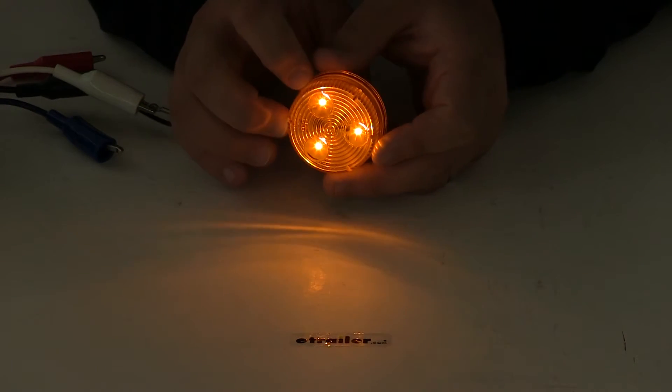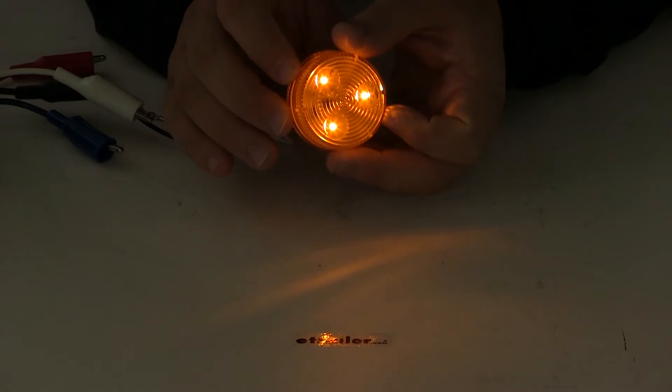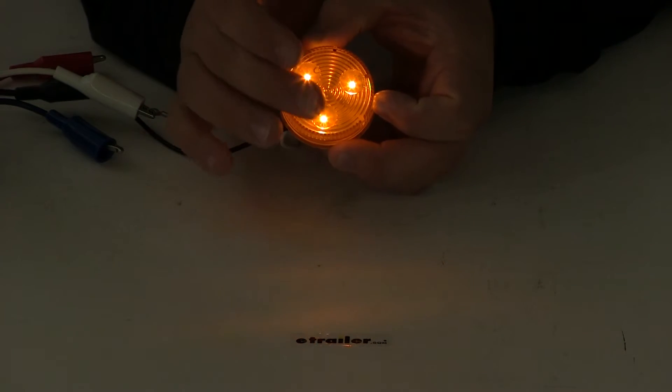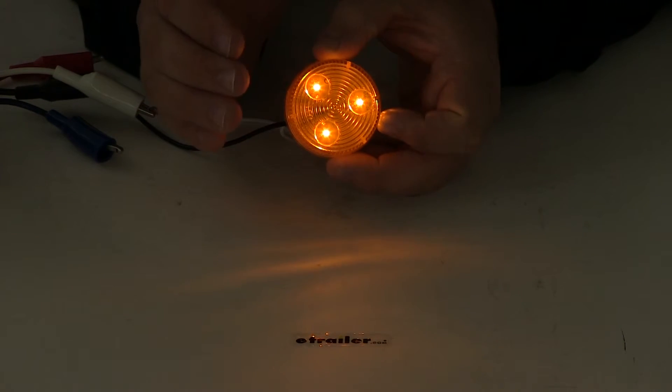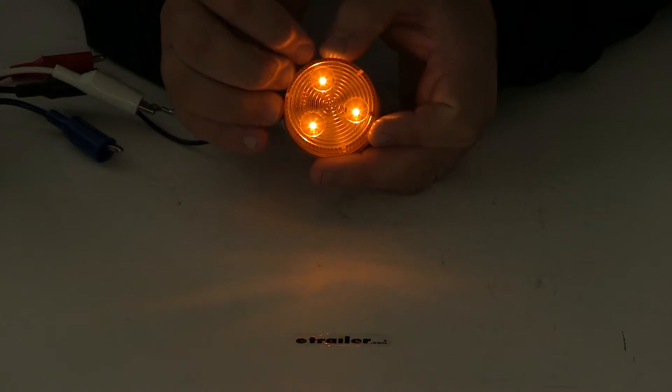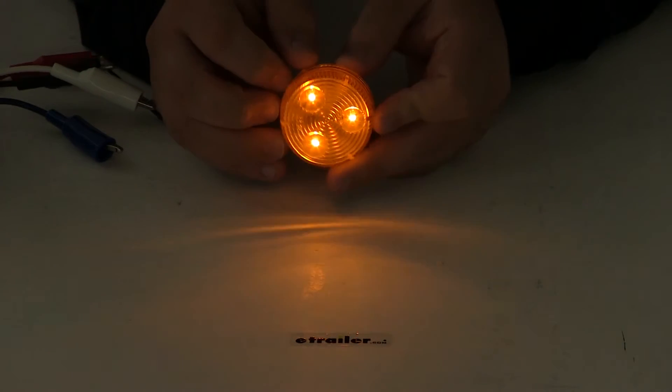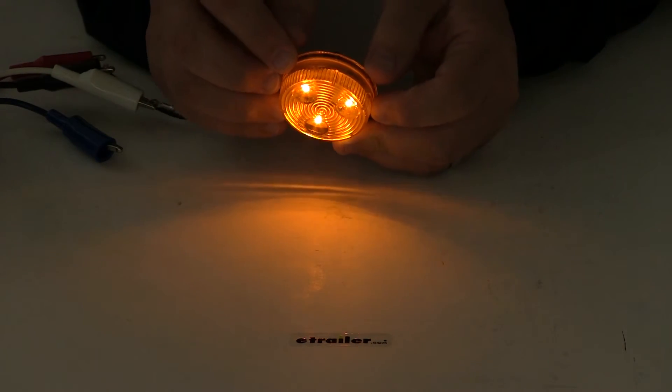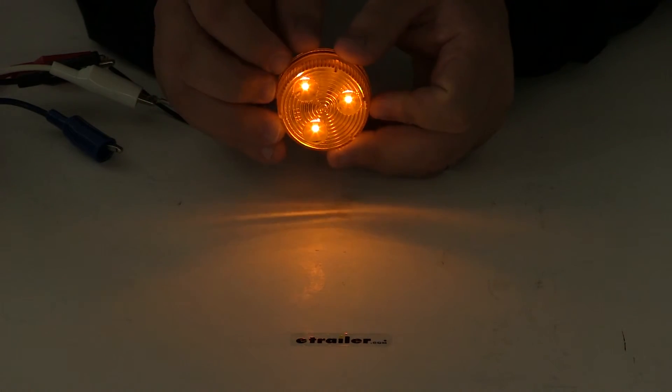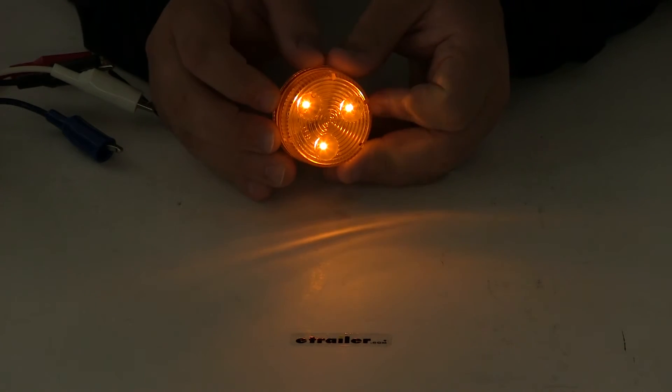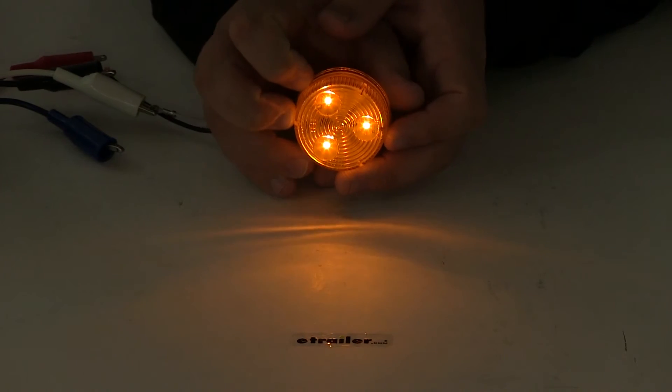So this is what the light looks like with power running to it and with our lights turned off. The multi diode design is really going to optimize our light output so it's going to send a pretty consistent strong LED signal. Again this is an amber light and it's designed to be used as a clearance or side marker light for your trailer.